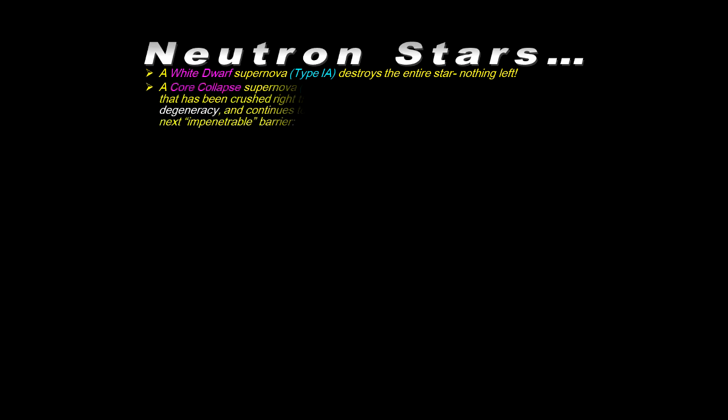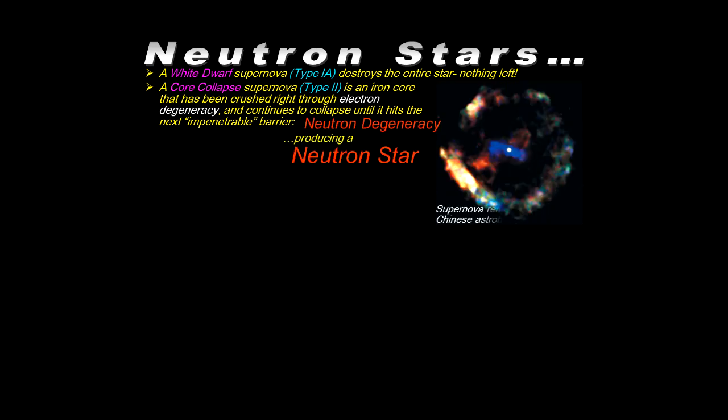We've encountered and studied the white dwarf and the white dwarf or type 1a supernova, which destroys the entire star, the core that's left over. And now we've also learned about the core collapse or type 2 supernova, being an iron core that's been crushed beyond the Chandrasekhar limit through the electron degeneracy continuing to collapse till it hits the next almost impenetrable barrier, which is neutron degeneracy producing a neutron star.